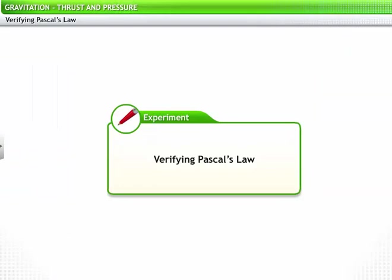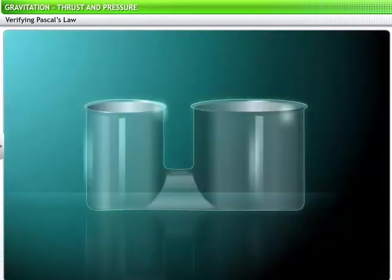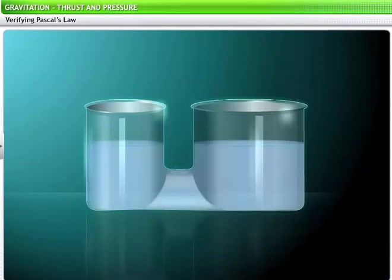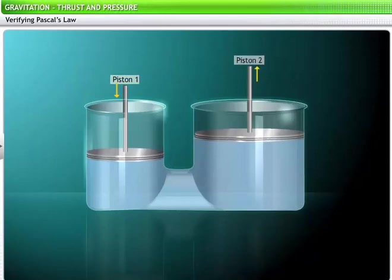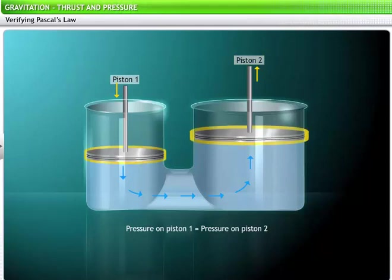Let's conduct an experiment to verify Pascal's Law. We take a container with two openings of unequal cross sectional areas. We fill this container with water and then close the openings with airtight pistons one and two. Then we push piston one inwards. As piston one is pushed inwards, piston two moves outwards. Thus the increase in pressure through piston one is conveyed undiminished through the liquid to piston two. As the area of cross section of piston two is greater than that of piston one, the thrust exerted on piston two is greater.